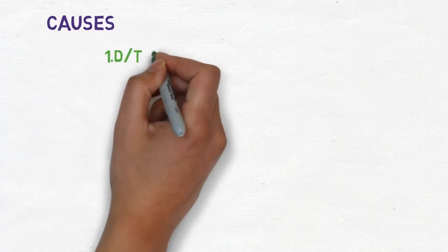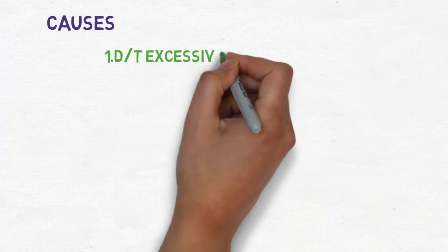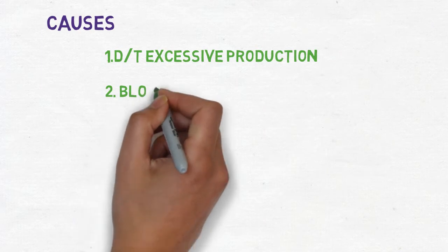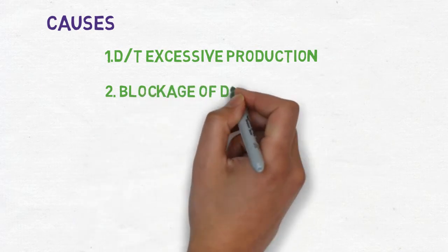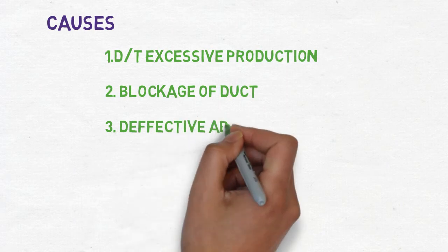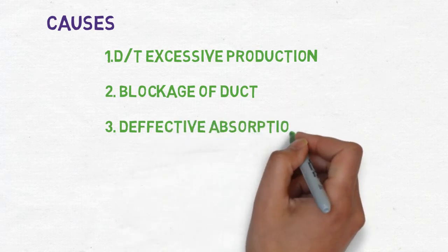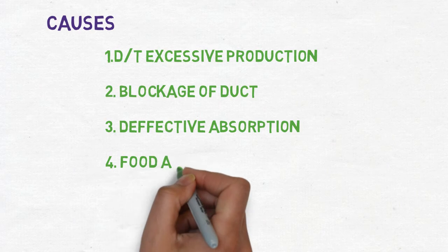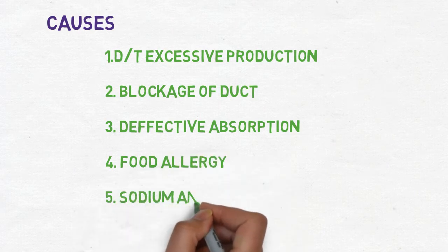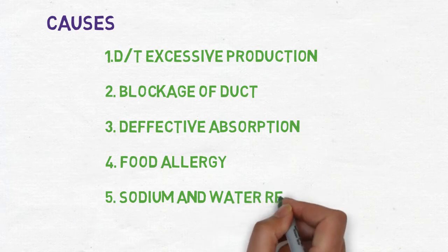What are the causes of this disease? We already discussed the normal physiology of endolymph. There is excessive production of endolymph by stria vascularis may cause this disease. If there is blockage of duct therefore the transport does not occur. If there is defective absorption or there is food allergy, maybe sodium and water retention. These are the causes of this disease.